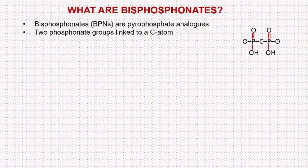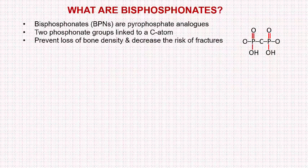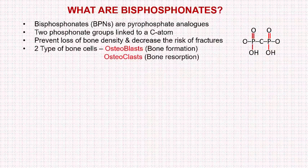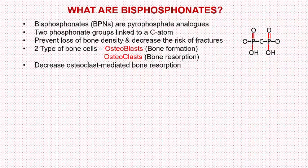One of the primary functions of bisphosphonates is to prevent the loss of bone density and decrease the risk of fractures. There are two main types of bone cells: osteoblasts that stimulate bone formation, and osteoclasts that stimulate bone resorption. The primary action of bisphosphonates is to decrease osteoclast-mediated bone resorption.